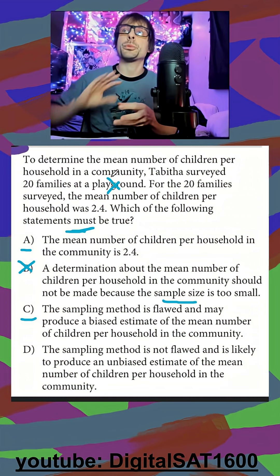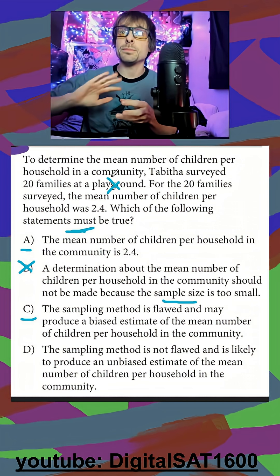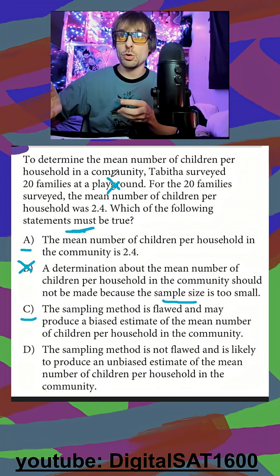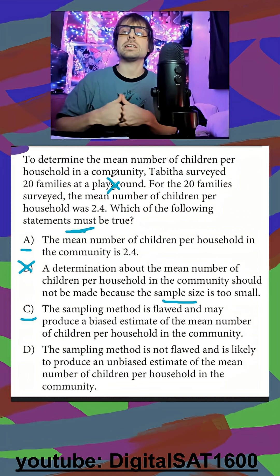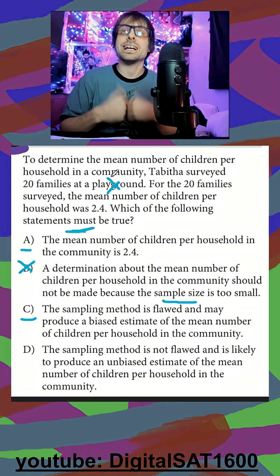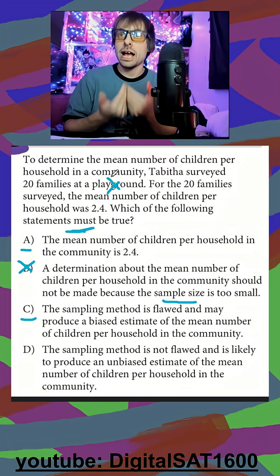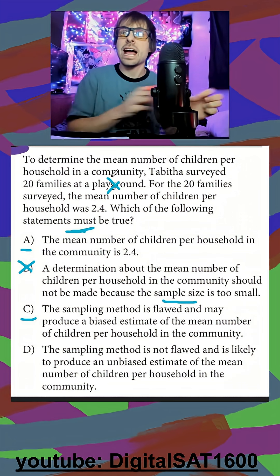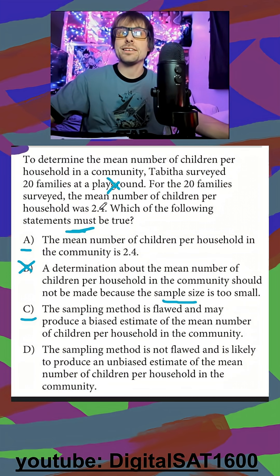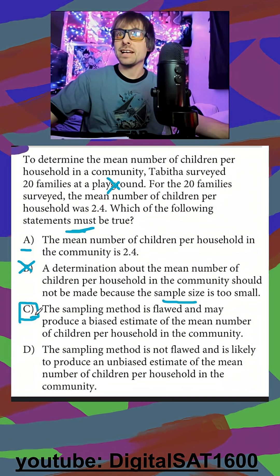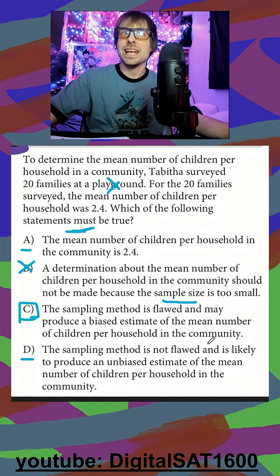Going to a playground means predominantly people with kids are going to show up, which will give you a probably higher mean of children than what the actual community has. So it's definitely going to be the biased method — answer C. In D, the sampling method is not flawed — that's just the antonym of C. So the answer is C.